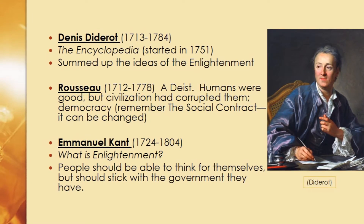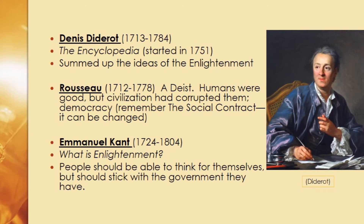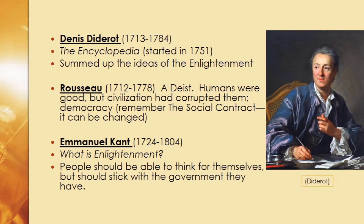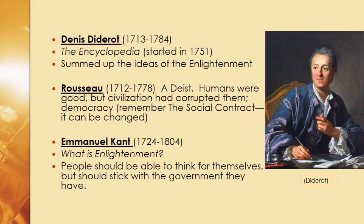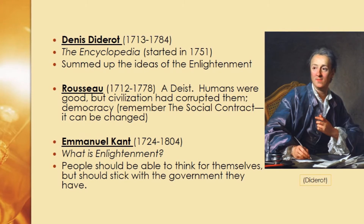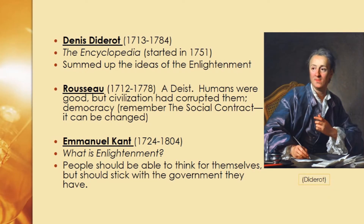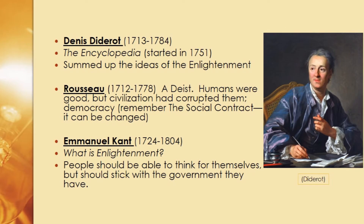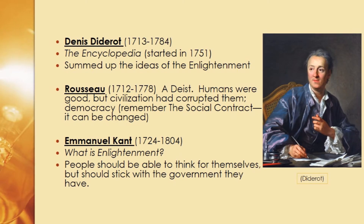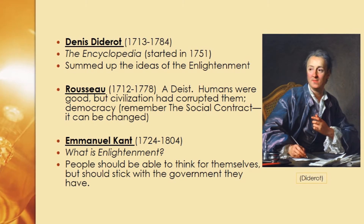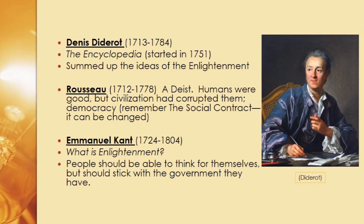Other people were starting to write about governments. Rousseau — also a Deist — thought that humans were actually good, but that a bad government could corrupt them. He believed that democracy was the best form of government. He also believed in the social contract, where a group of people give their power to one person who then protects them, but crucially, that social contract can be changed — if people didn't like the government they chose, they could change it.